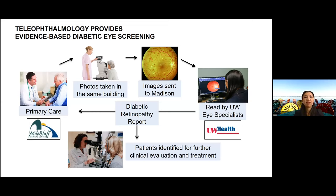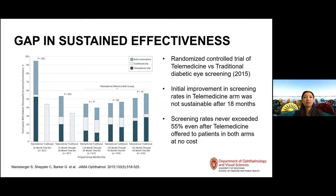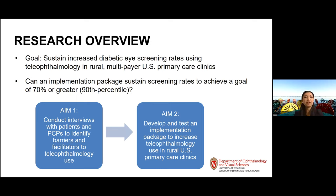If these programs are so wonderful and effective, why don't we see them everywhere? Unfortunately, many clinics invest incredible amounts of time and financial resources to purchase equipment and yet the cameras gather dust in the closet. This was borne out in a randomized controlled trial which found initial improvements in screening rates for patients offered teleophthalmology, but that wasn't sustained after just 18 months and screening rates never exceeded 55%, even though the technology was offered at no cost. Our research focused on how to sustain effectiveness in increasing diabetic eye screening rates using teleophthalmology in rural, multi-payer US primary care clinics, and whether an implementation program could sustain rates of 70% or greater — the 90th percentile.